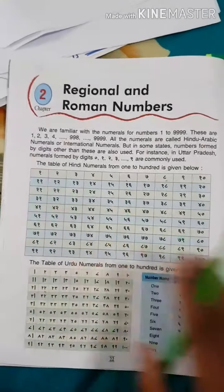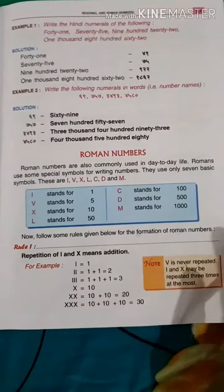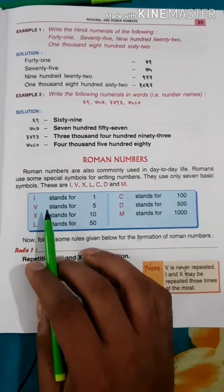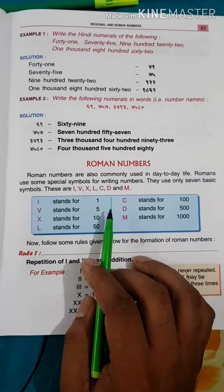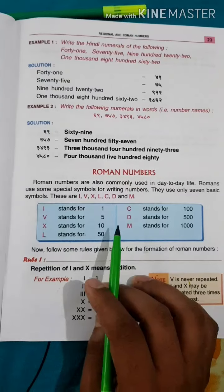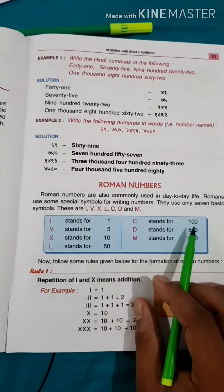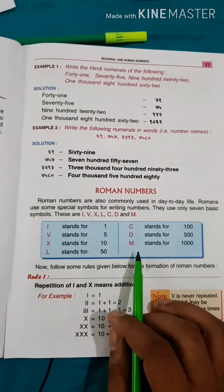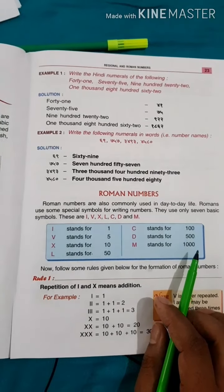Okay students, let's move to the first topic, Roman numbers. Here it is, we already have a table given. I stands for 1, V stands for 5, if we read together X stands for 10, L stands for 50, C stands for 100, D stands for 500, and M stands for 1000.